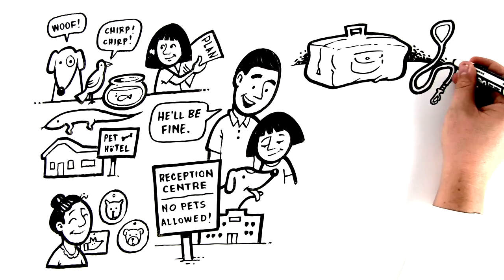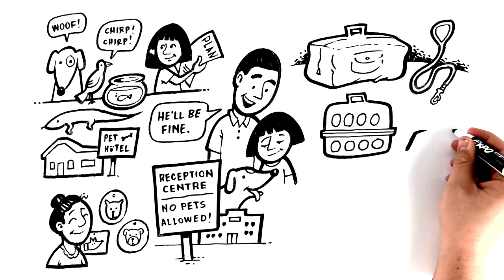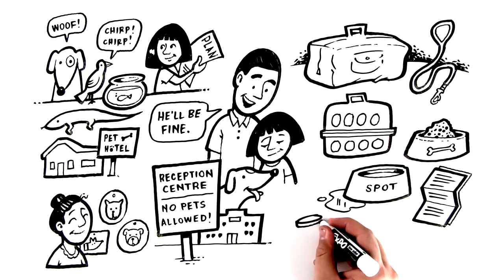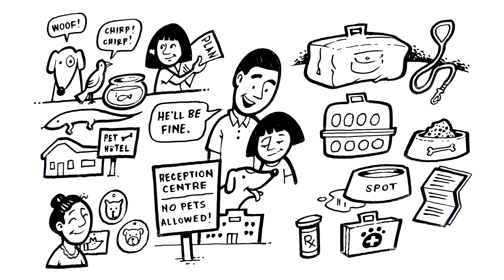Include a muzzle or harness, carrier or cage, food and water for at least three days, and don't forget dishes, copies of medical records, medications, and basic first aid supplies.